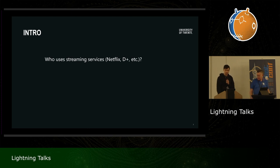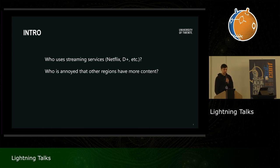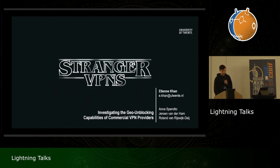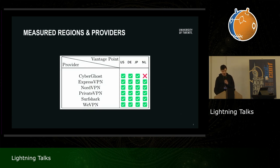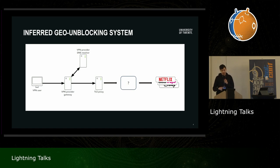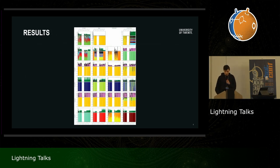Who's using streaming services? Who's annoyed that some regions have more content than others? Who knows about geo-unblocking through VPN providers? But who knows how they actually do it? So this is my talk: Stranger VPNs. It's a paper I wrote with my colleagues, and this is the lightning version. We bought VPN services for different regions and tried to see exactly how they do geo-unblocking. It's not easy because connections to Netflix or Disney+ get terminated at a TLS proxy — your TCP connection stops but the TLS stream keeps going through — so you can't use ping or traceroute to investigate further. But we found a way to extract data.